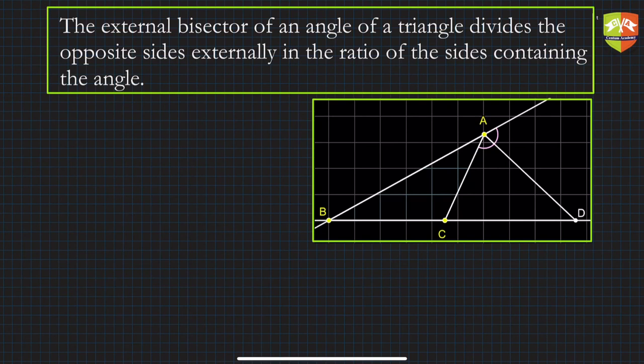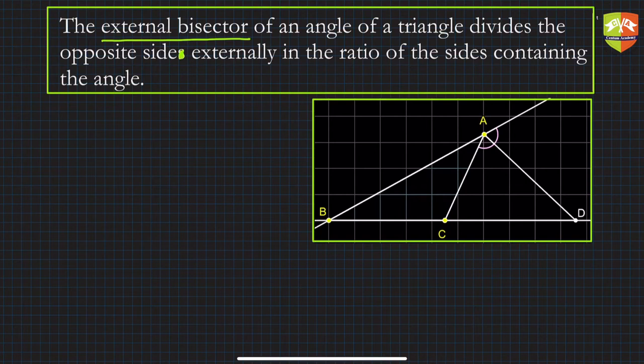Hello and welcome to another session on triangles. In this session we are going to discuss another very important theorem related to triangles called the External Bisector Theorem. It states that the external bisector of an angle of a triangle divides the opposite side externally in the ratio of the sides containing the angle.